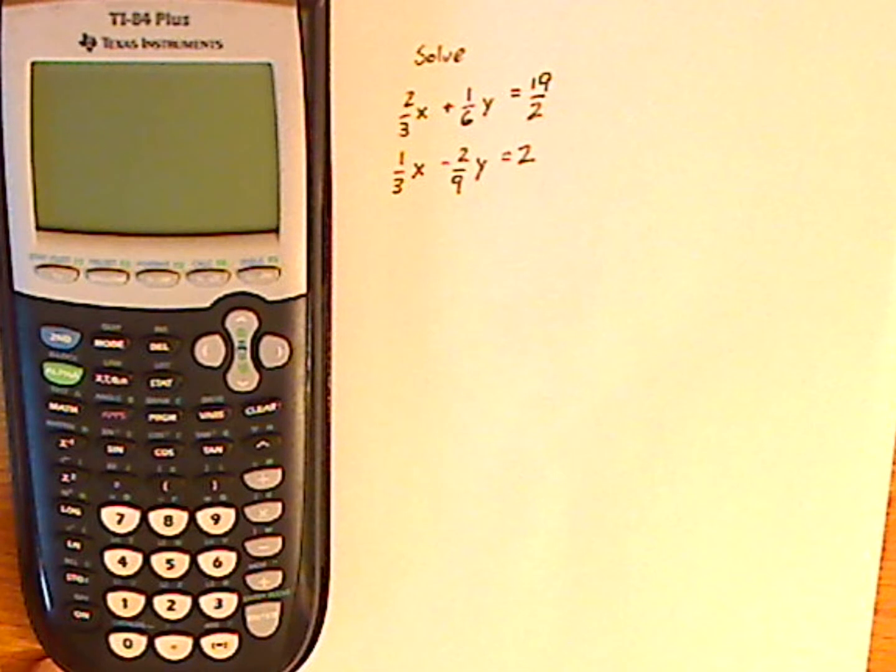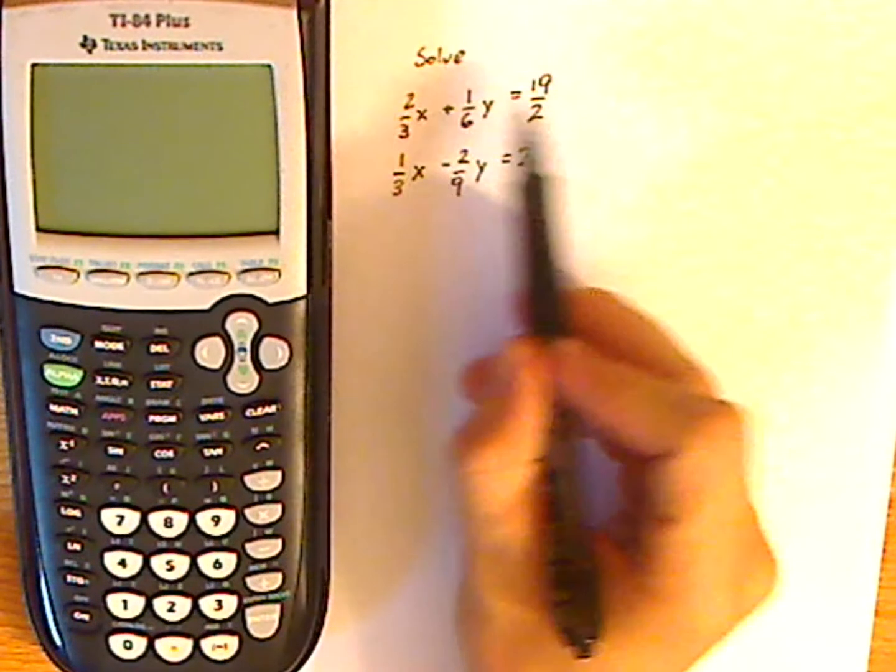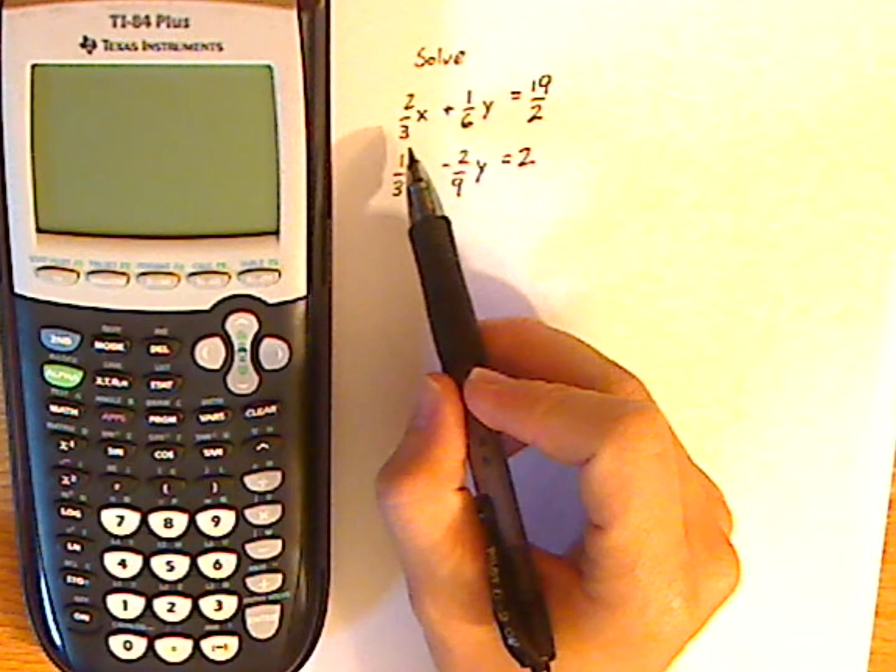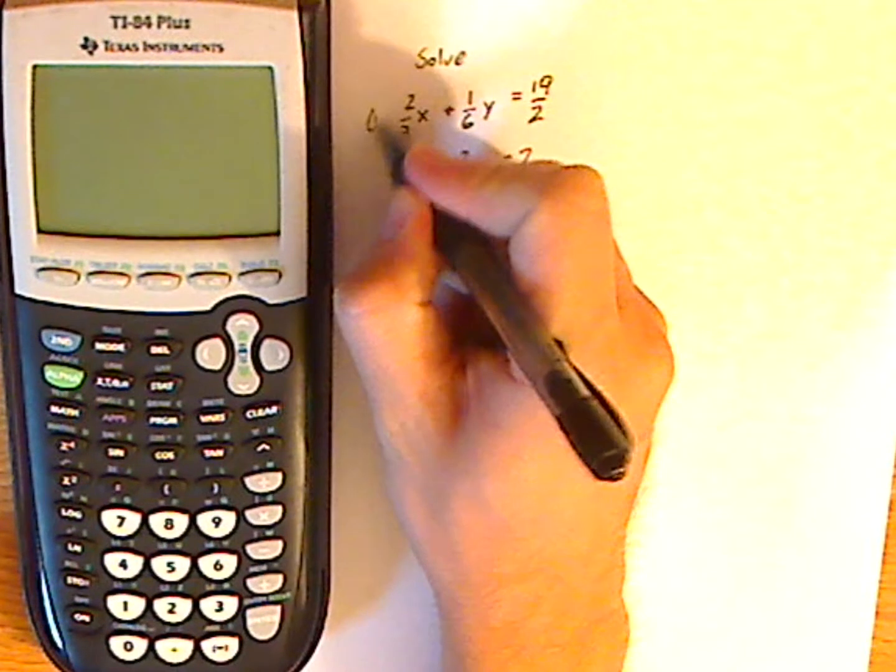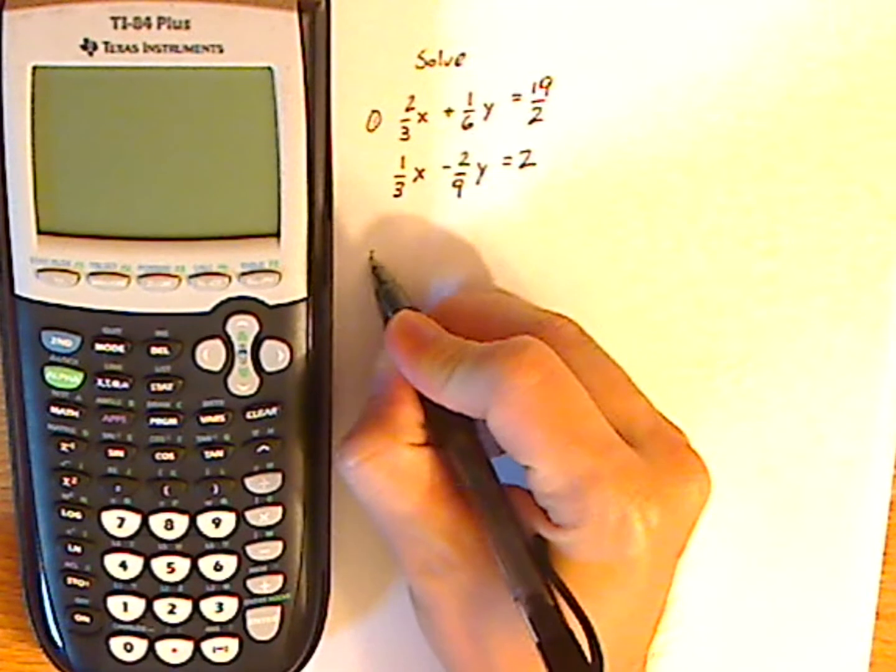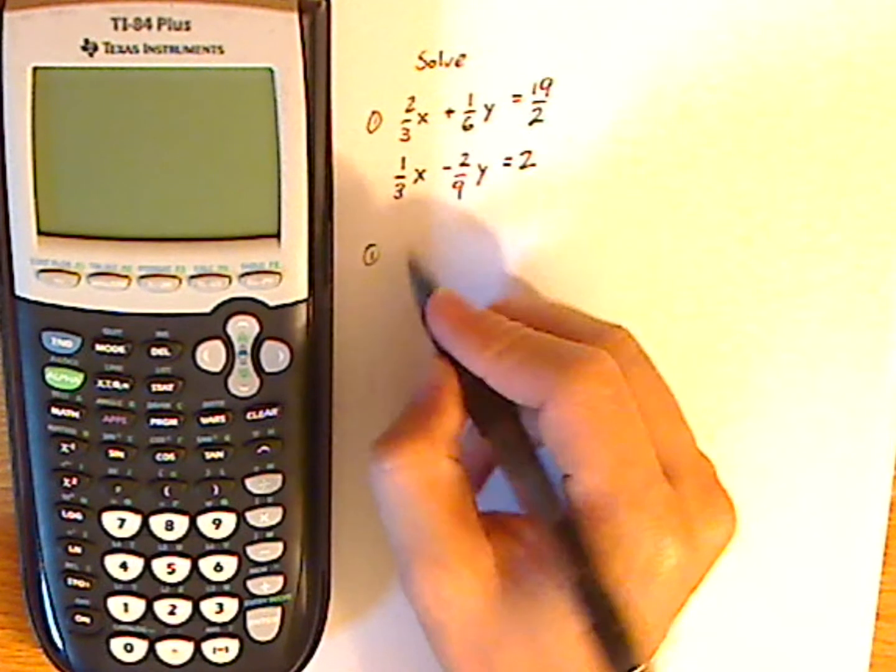Now with using a graphing calculator, you can't necessarily plug them in when they're in standard form like this, so you have to manipulate it. I'm going to start with the first equation, label it equation number 1 so I can keep track of it.